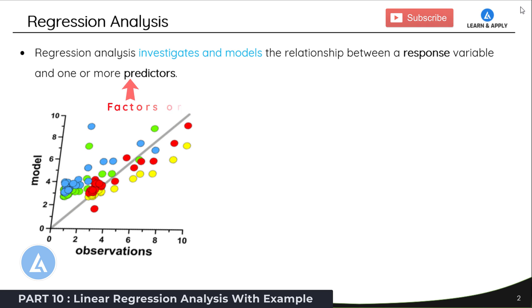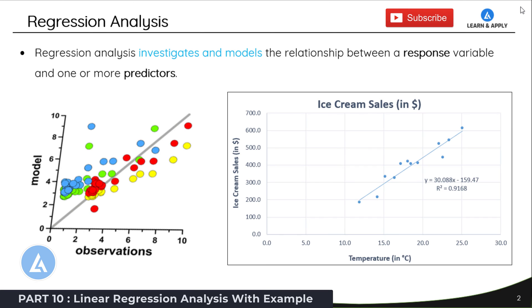Regression analysis is one of the most important tools as part of the analyze phase in Six Sigma implementation. For example, during the correlation study we saw there is a strong correlation between ice cream sales and temperature of the day. If you want to identify what kind of relationship they have and formulate the equation explaining variation in ice cream sales with respect to temperature in degree Celsius, then we are going to use regression analysis.